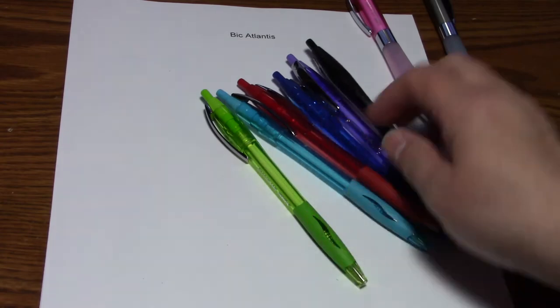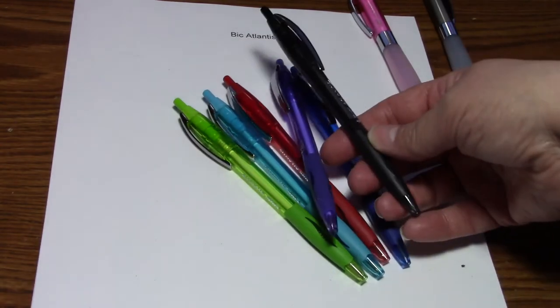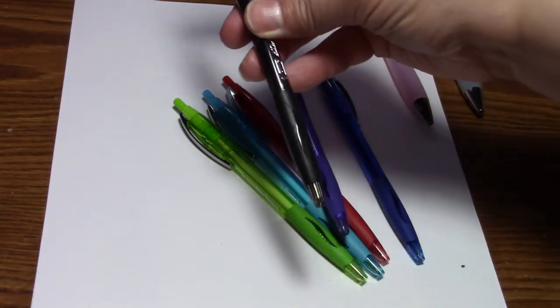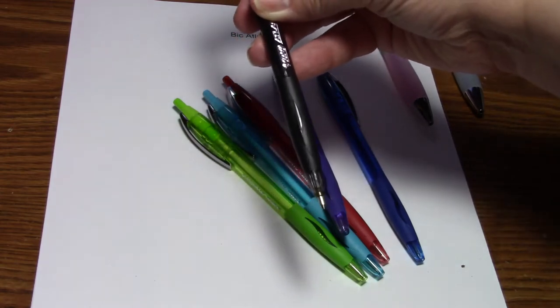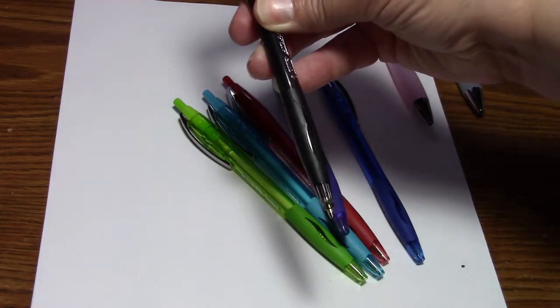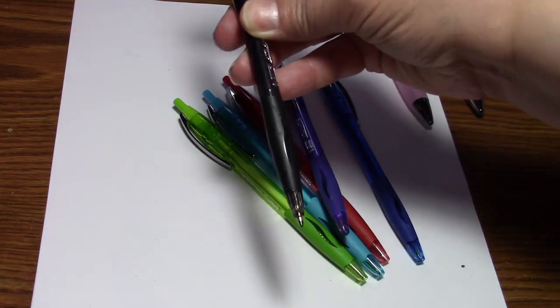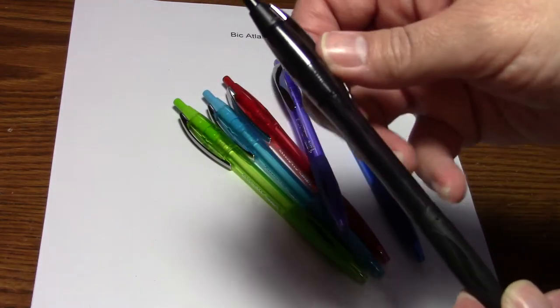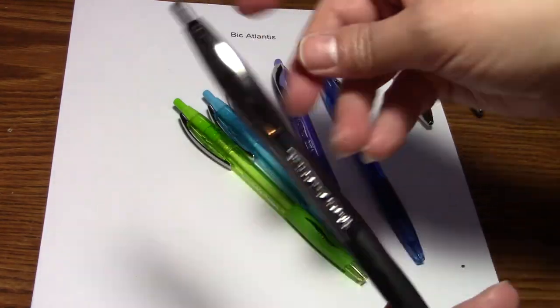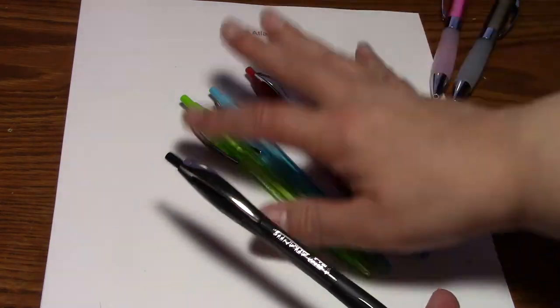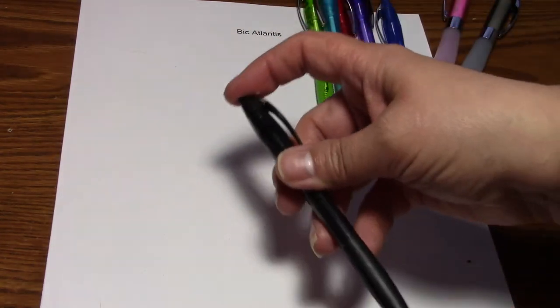Here are your classic Atlantis pens. They're clickable. This one doesn't click quite as smoothly. They do have a clip. And let's see how they write.